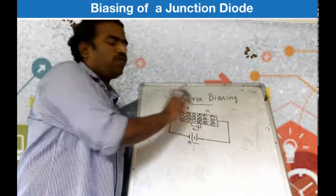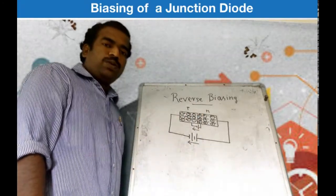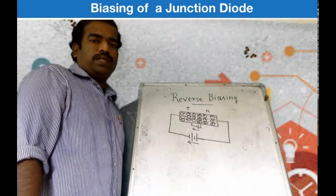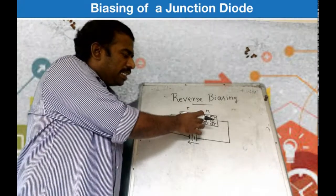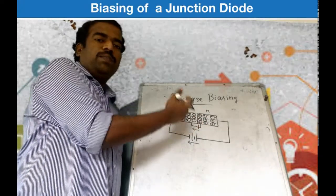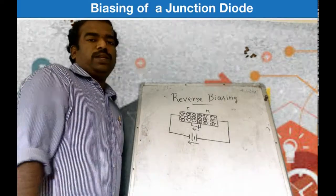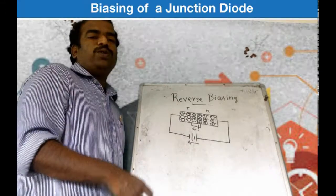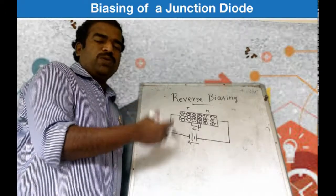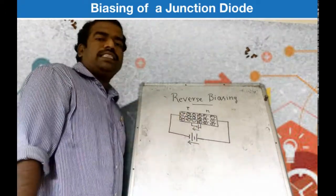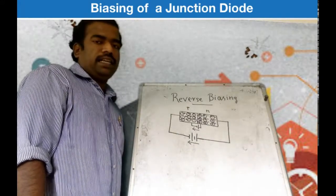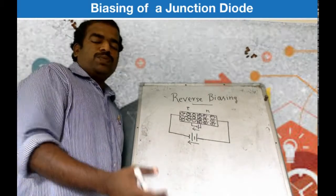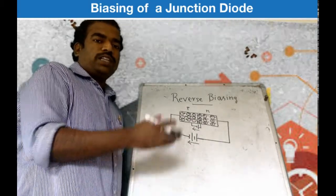So virtually no current flows across the junction — that is reverse biasing. The reverse biasing results in very high junction resistance, creating a large potential barrier.